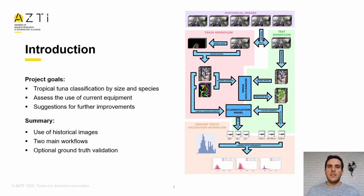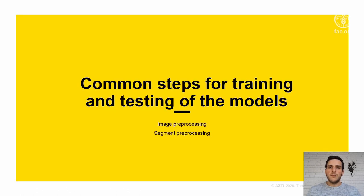We use cameras already installed on the boats that take images of the fishery. Our work begins by making a selection of the available images. Then, based on these images and annotations made by expert observers, we train and validate our prediction models. Finally, we compare our estimates with official data collected in ports. The two main workflows share two of their tasks: image preprocessing and segment preprocessing.